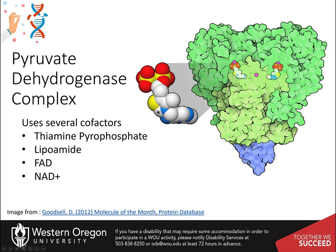The reactions performed in the pyruvate dehydrogenase complex are tricky, so several specialized chemical cofactors are used by the enzyme subunits. This includes thiamine pyrophosphate, lipoamide, FAD, and NAD. The E1 subunit performs the first step and uses thiamine pyrophosphate to extract carbon dioxide from pyruvate.